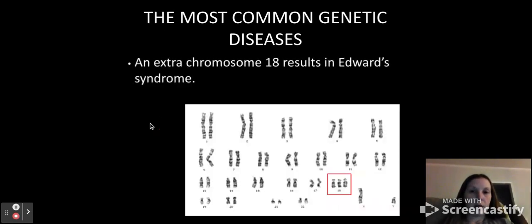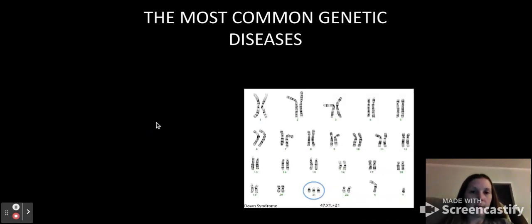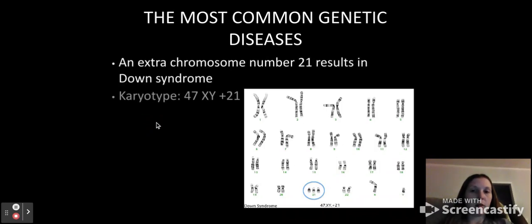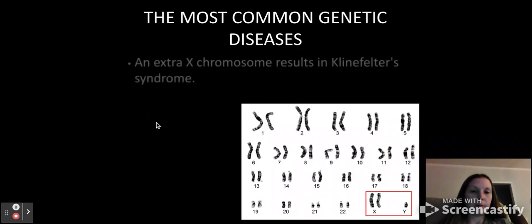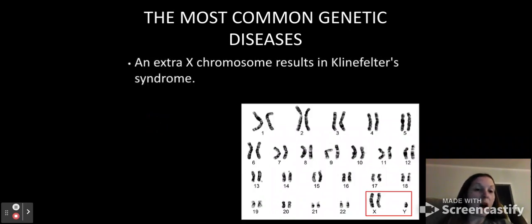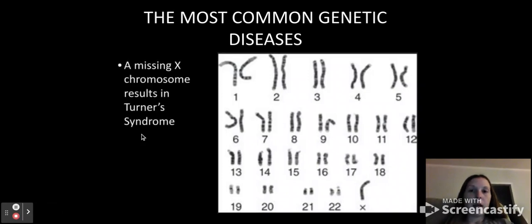So if you write this one, it would be 47 XY plus 18. An extra 21, 47 XY plus 21. Here they have an extra X, but also a Y present. So you would write 47 XY plus X. You could also write here 47 XXY. You can do either one of those. Both would be correct. And then the most common genetic diseases is if we have a missing X, which shows us Turner syndrome. So this would be 45 X minus X because you can't write X.